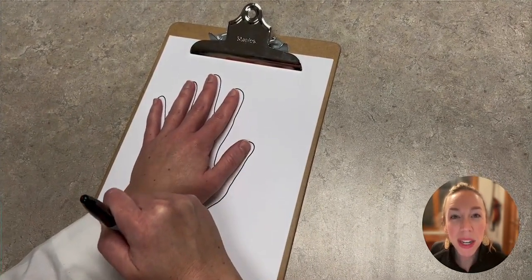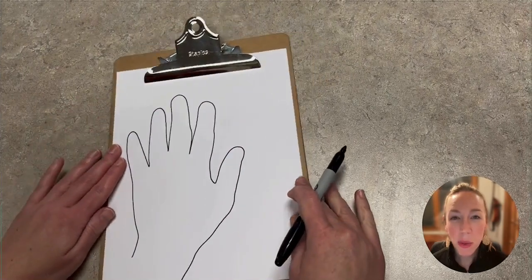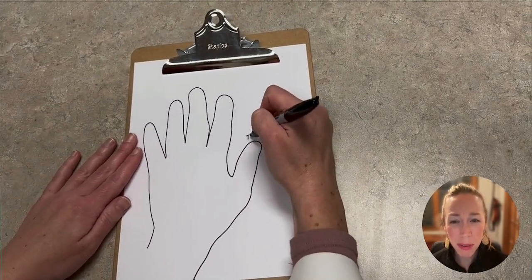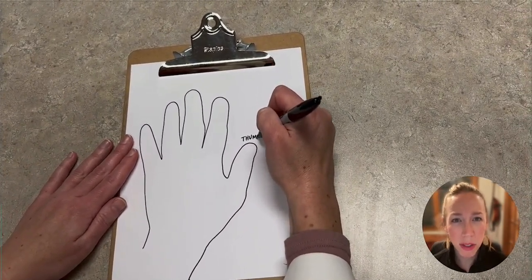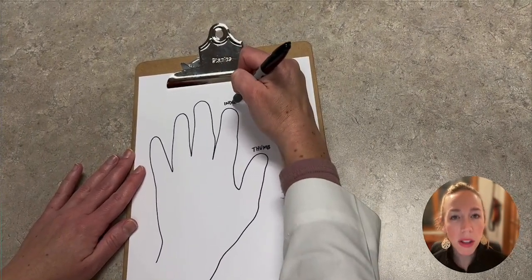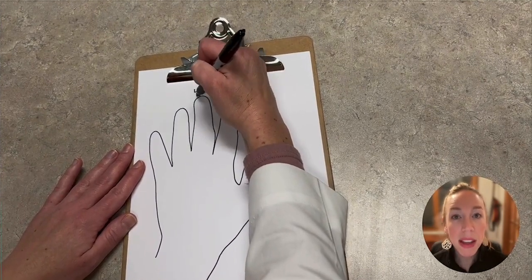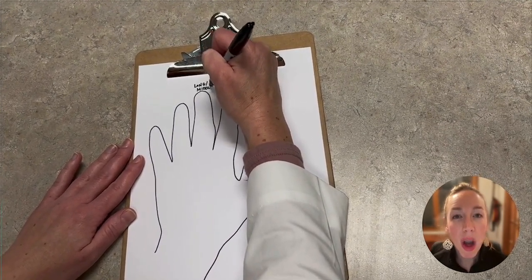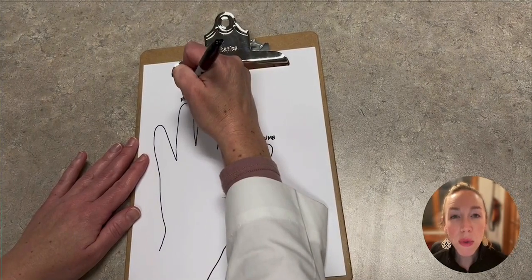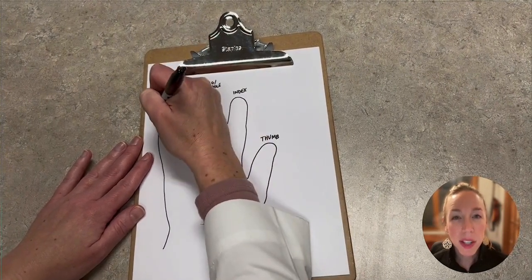After tracing your left hand, we're going to label the digits so we don't number them. That gets confusing. Some people say it's a thumb and four digits. Other people say it's five digits. So what is it? Well, to avoid confusion, we label them what they are. Thumb, index, long or middle, ring, small or little.